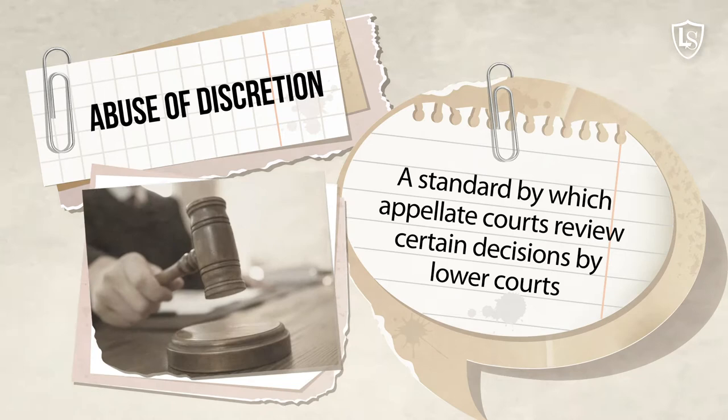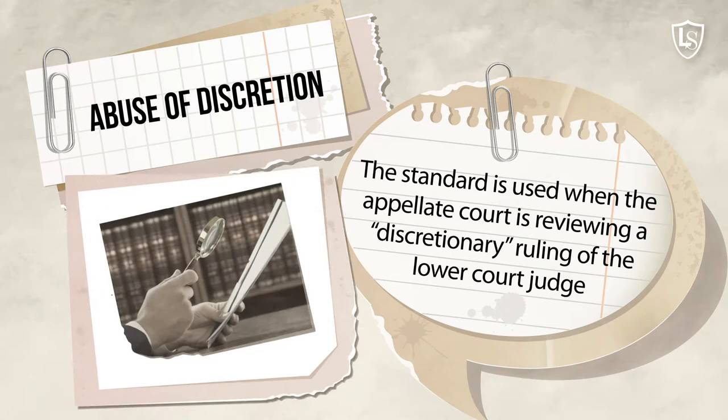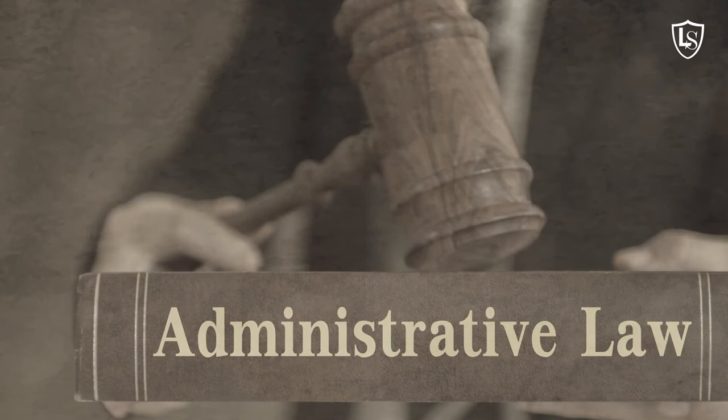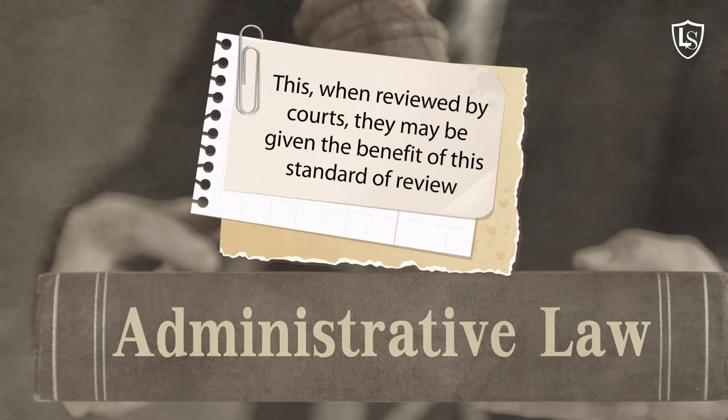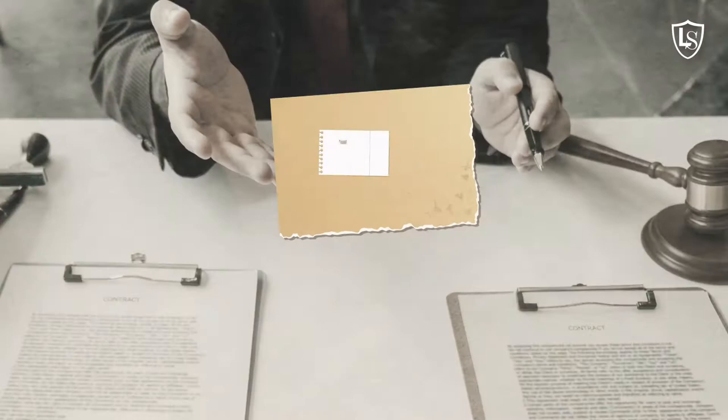Abuse of discretion is a standard by which appellate courts review certain decisions by lower courts. The standard is used when the appellate court is reviewing a discretionary ruling of the lower court judge. For example, administrative agencies are typically given wide discretion in many types of determinations, and when reviewed by courts, they may be given the benefit of this standard of review.